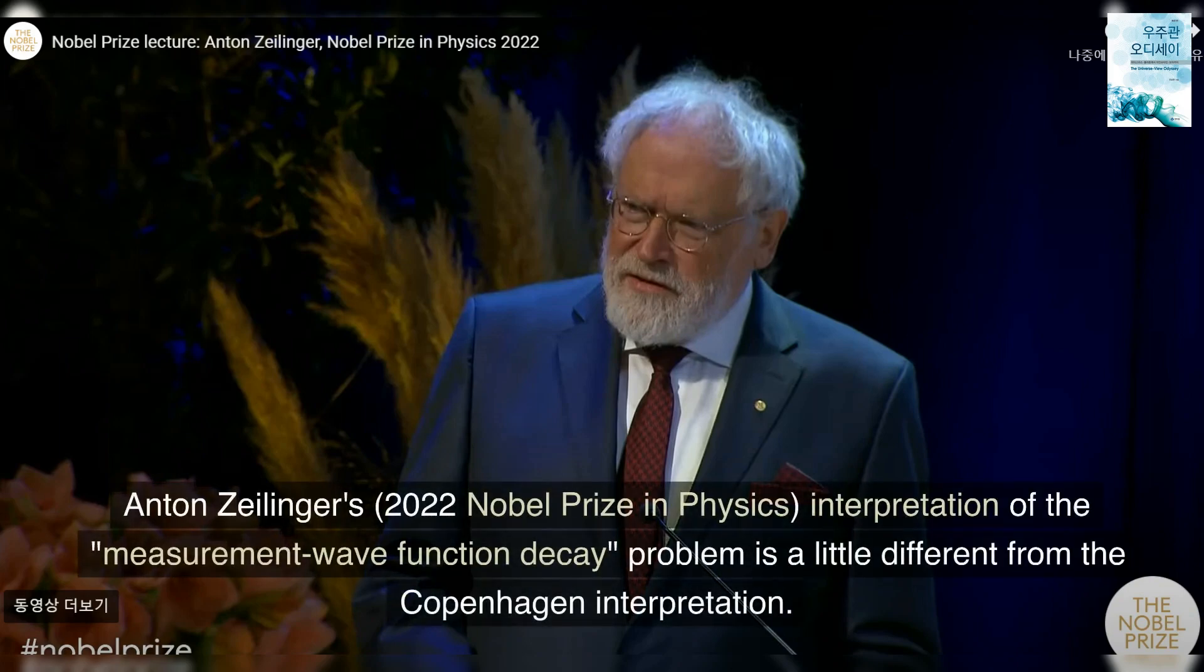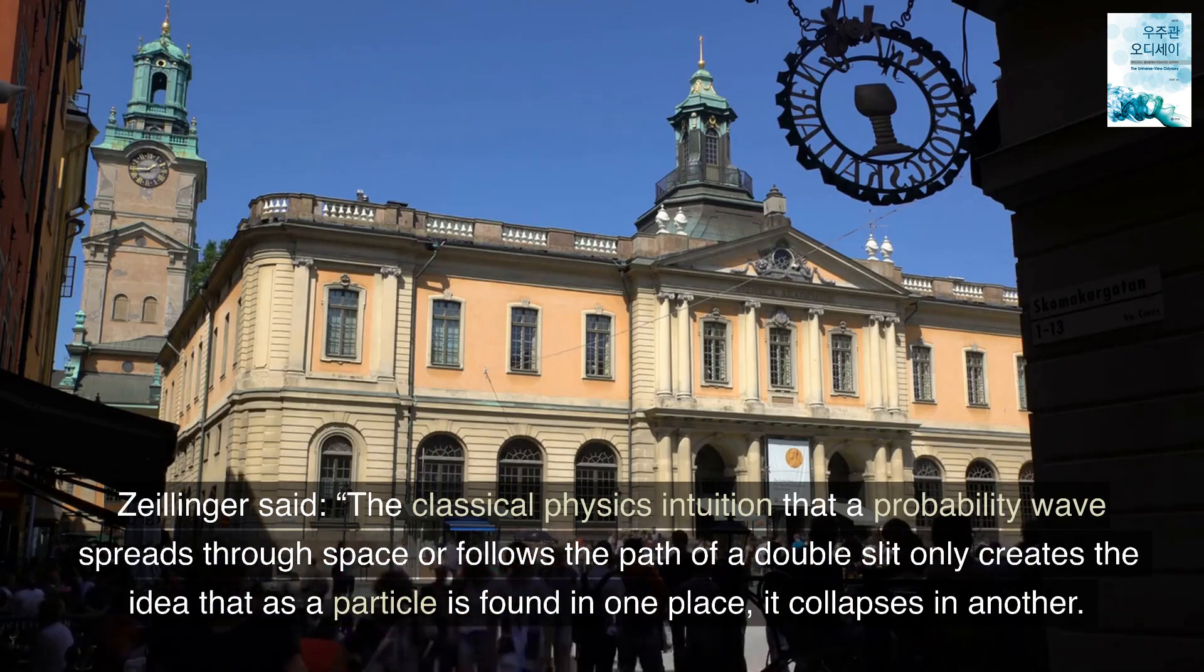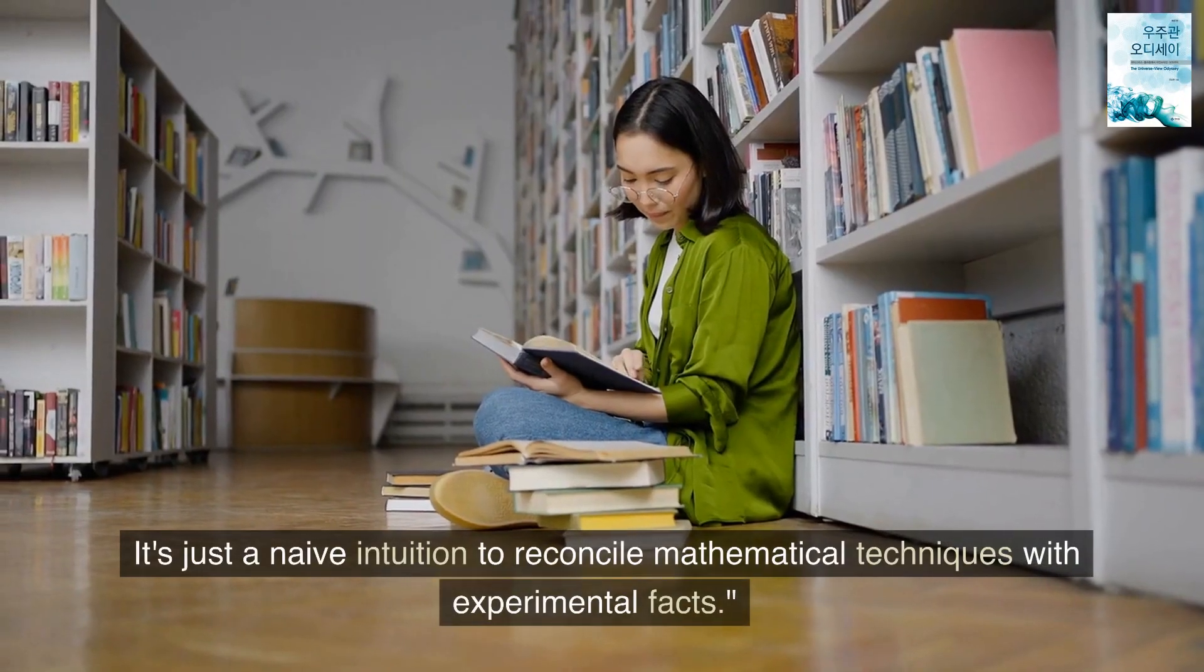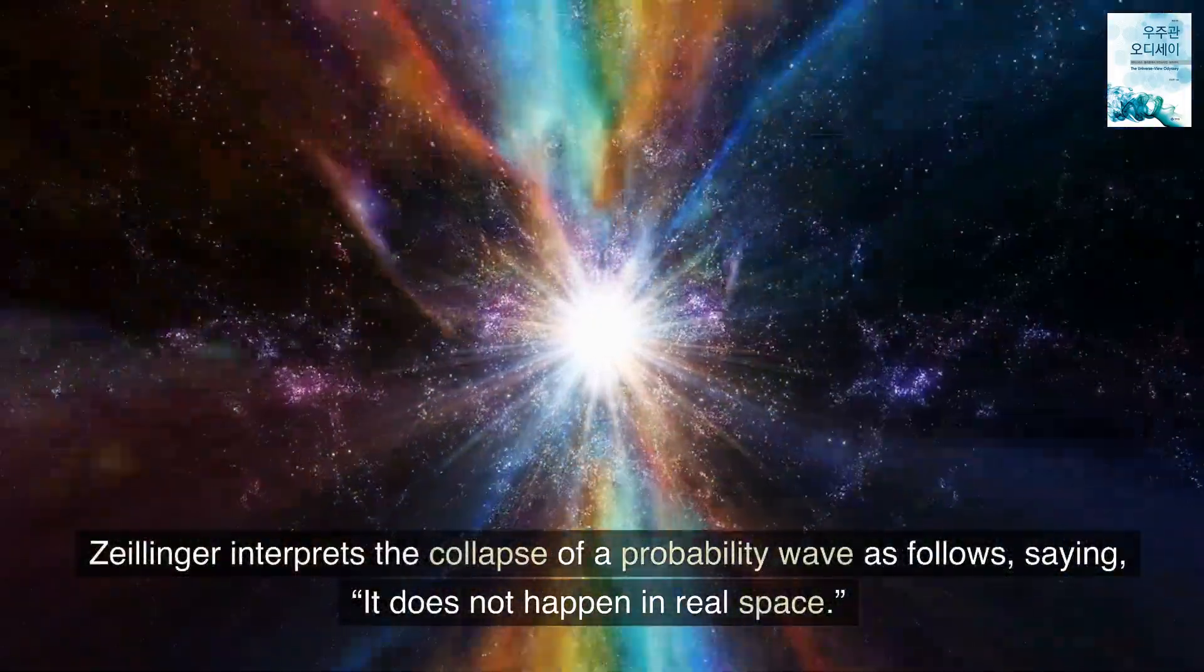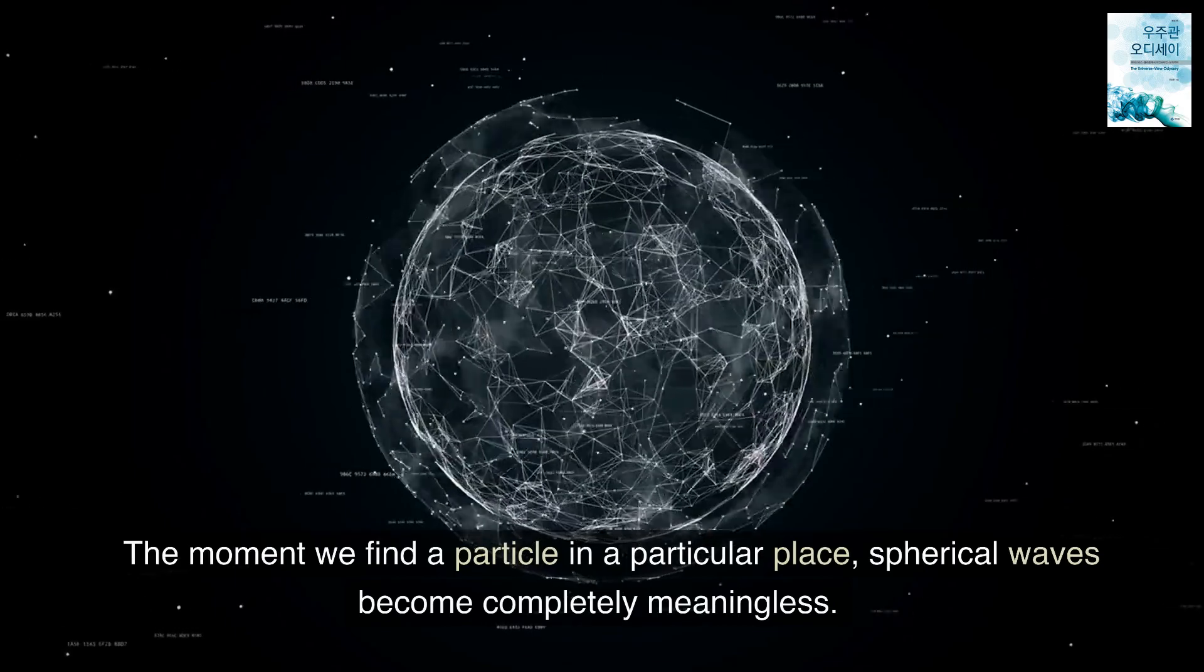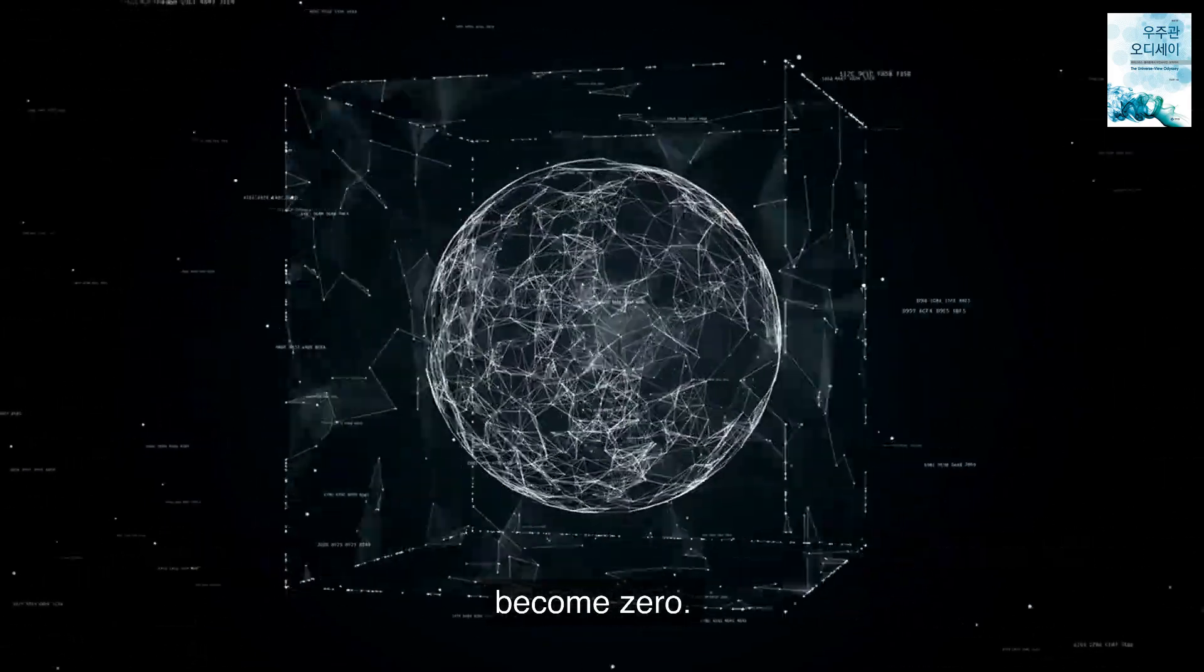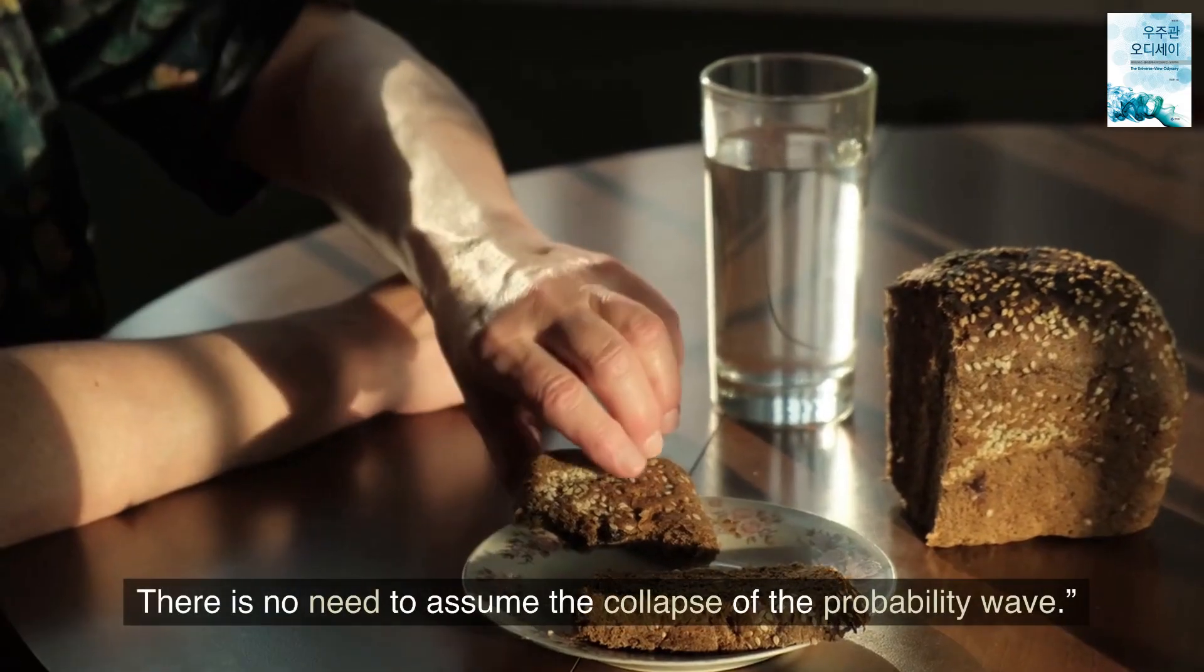Anton Zeilinger's 2022 Nobel Prize in Physics interpretation of the measurement wave function decay problem is a little different from the Copenhagen Interpretation. Zeilinger said, 'The classical physics intuition that a probability wave spreads through space or follows the path of a double slit only creates the idea that as a particle is found in one place, it collapses in another. It's just a naive intuition to reconcile mathematical techniques with experimental facts.' Zeilinger interprets the collapse of a probability wave as follows, saying, 'It does not happen in real space. The probability wave, which is a mathematical wave function visualized using classical physics intuition, is nothing more than a mental construct. The moment we find a particle in a particular place, spherical waves become completely meaningless. This is because the probability of finding the particle elsewhere has become zero.' Naturally, there is only one particle. There is no need to assume the collapse of the probability wave.